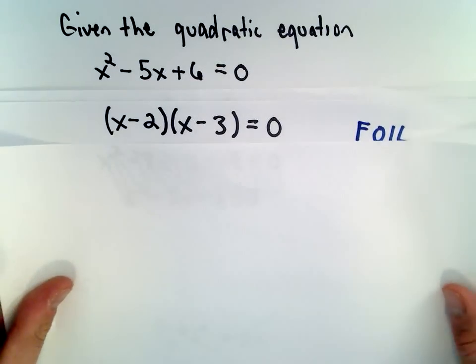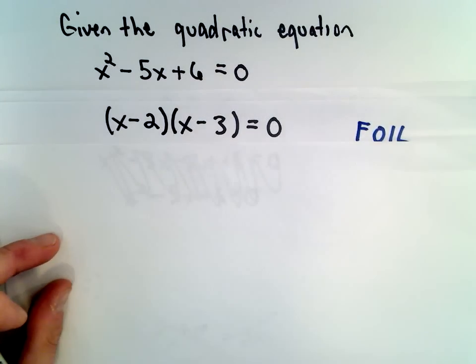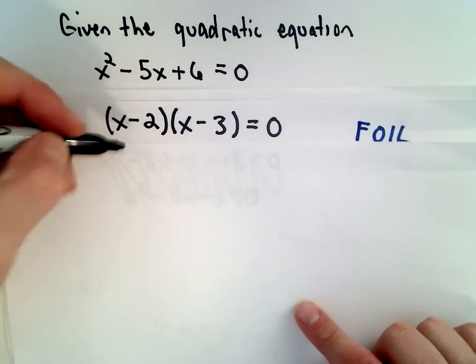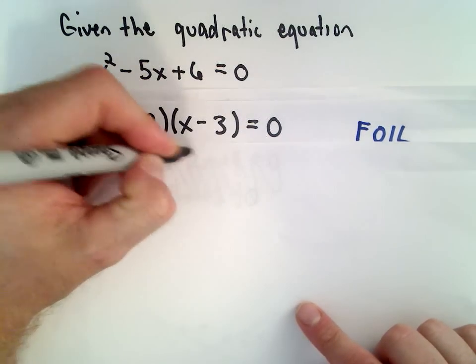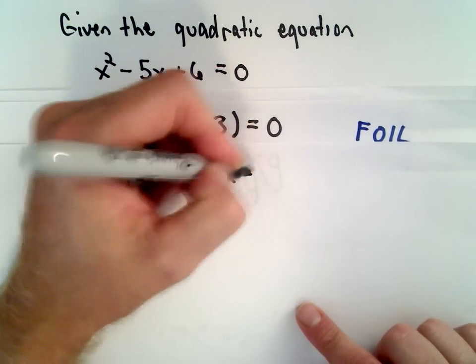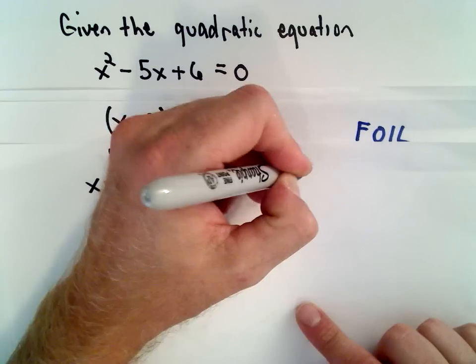This is good now because we've got the left side factored. We've got one side of the equation equal to 0. Once we do that, we take each factor and we set it equal to 0. So let's go ahead and actually solve this quadratic equation.